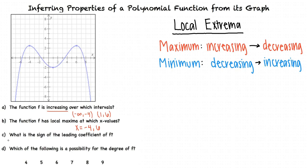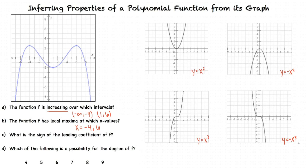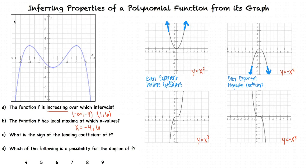Next we have question C, which deals with finding the sign of the leading coefficient of f. We can do this by looking at the shape of the graph. Looking at y equals x squared and y equals negative x squared: if the degree of the function is even and the leading coefficient is positive, both ends of the graph point upward; if the leading coefficient is negative, both ends point downward. You could also compare y equals x to the fourth and y equals negative x to the fourth, or y equals x to the sixth and y equals negative x to the sixth.